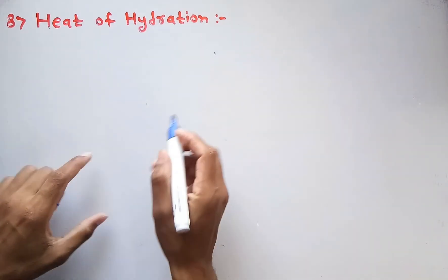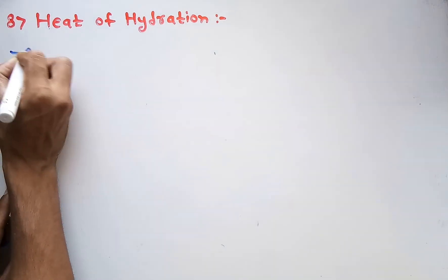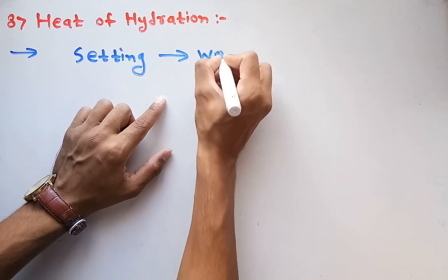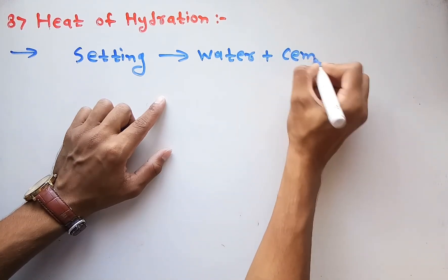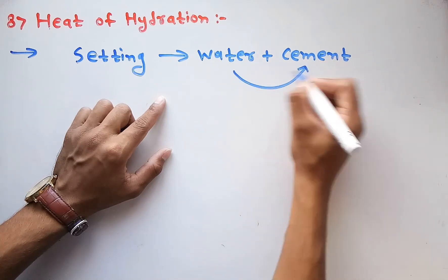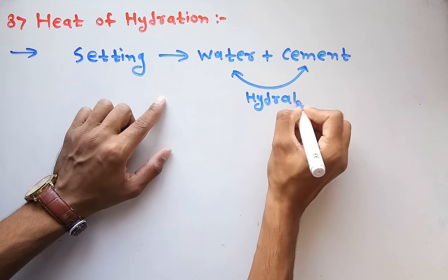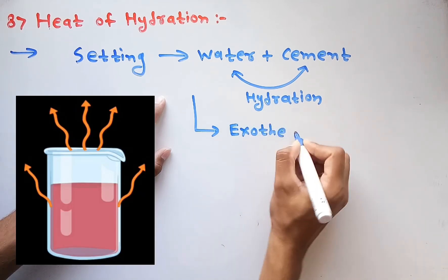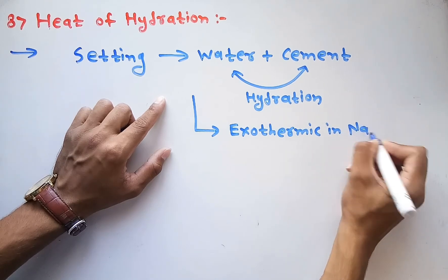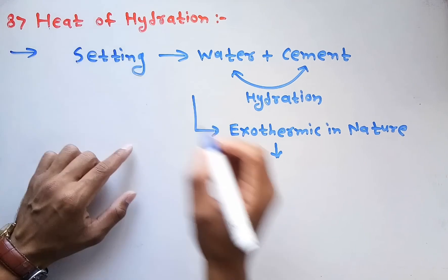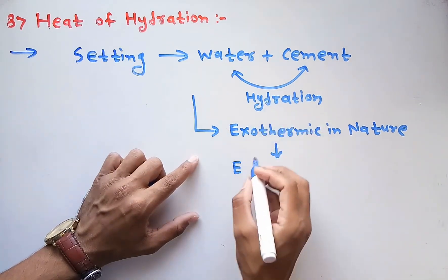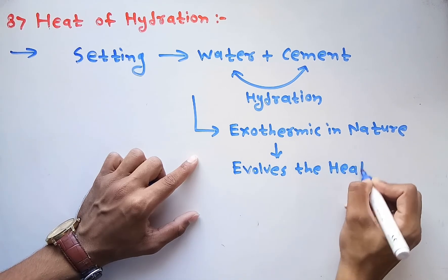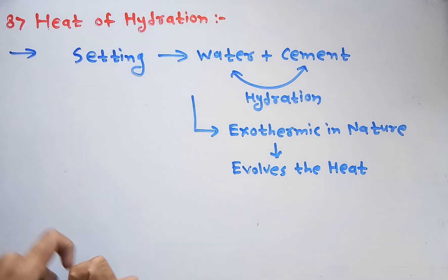The next test is heat of hydration. Heat of hydration refers to the setting of cement, which occurs due to the addition of water into cement. This process is known as hydration, and the hydration process is exothermic in nature — meaning it evolves heat.